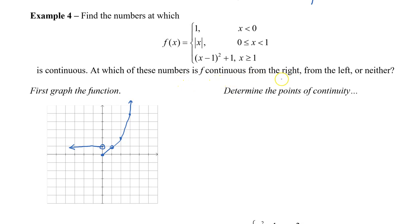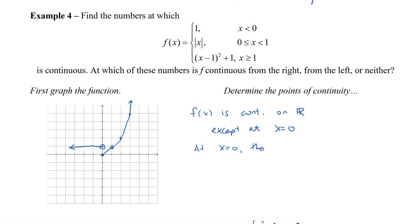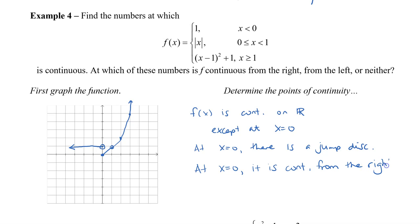At which of these numbers is f continuous from the right, from the left, or neither? We can see that this graph is continuous everywhere except right at x equals 0, because there is a jump discontinuity. So f of x is continuous on all the real numbers except at x equals 0. However, we can say it's continuous from the right at x equals 0 because there is a closed endpoint, but not from the left because of the open circle.